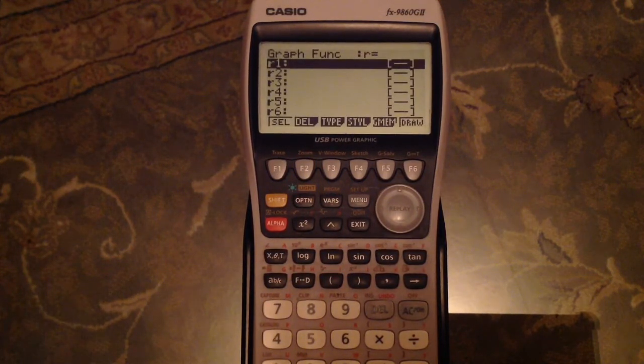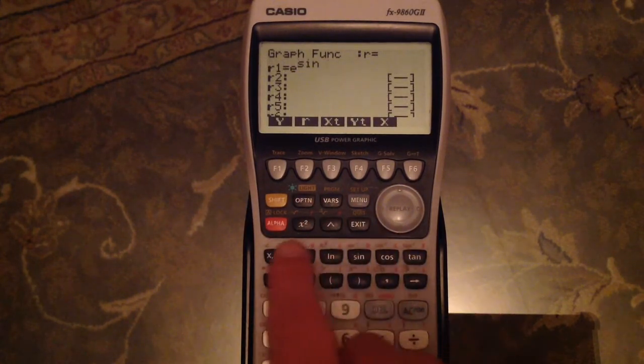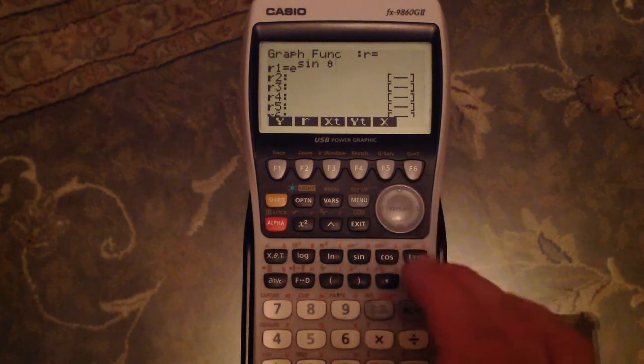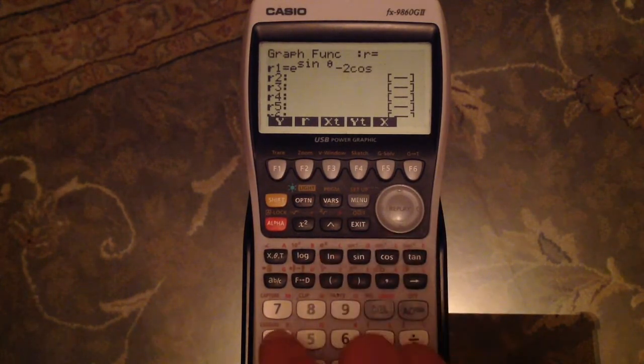Of course, when we're doing polar graphs we can do some very exciting ones. So here is a very complicated expression you may want to follow along with me. This is e to the power of sin theta, coming down, minus 2 cos 4 theta.